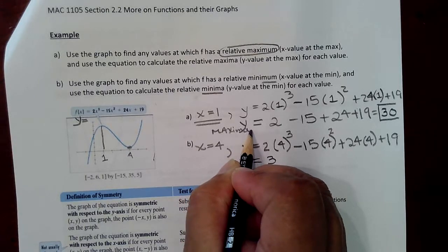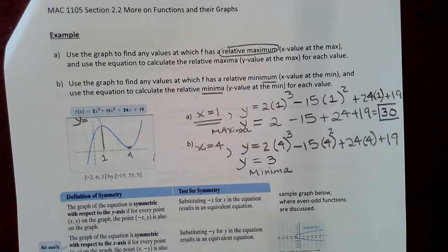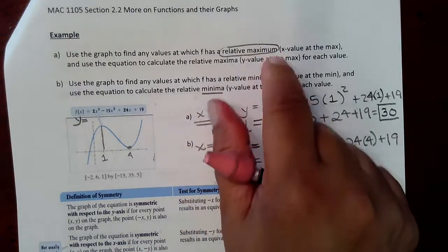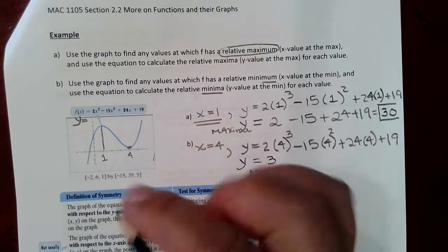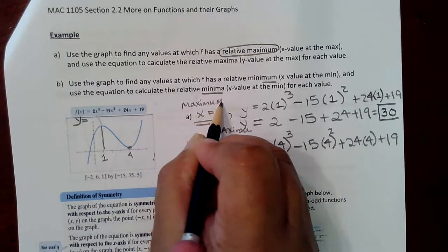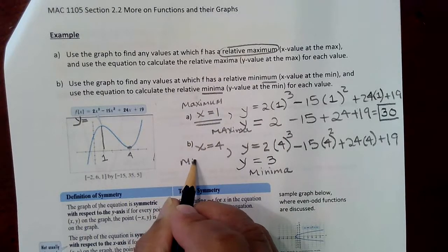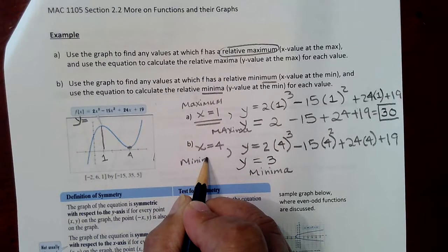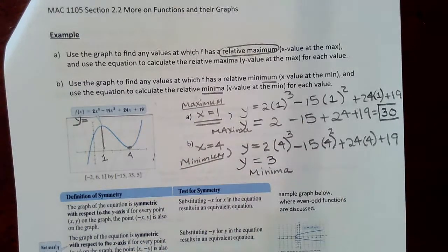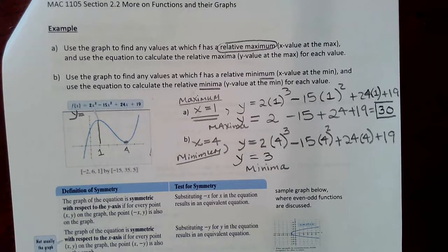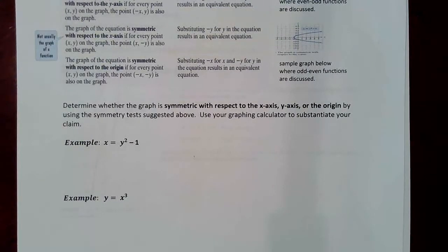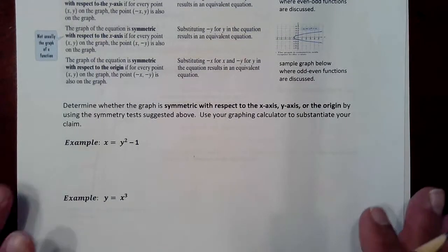That's what you're finding when you find the y value — the relative maxima or relative minima. The x values are called the relative maximum or the relative minimum. Moving on to tests of symmetry: we just did a couple of problems regarding relative max and relative min, and now we're looking at various tests for symmetry.